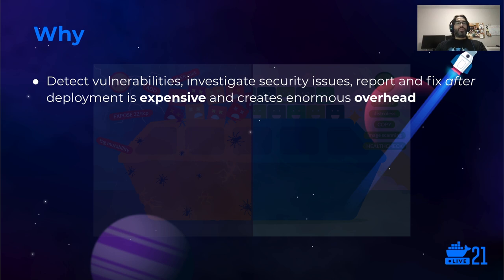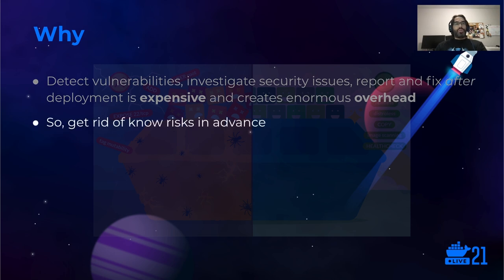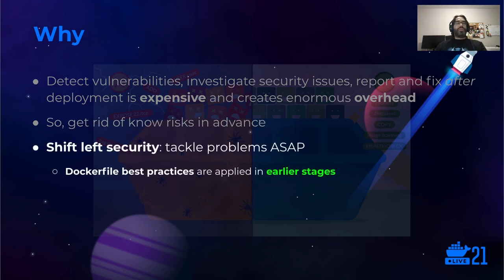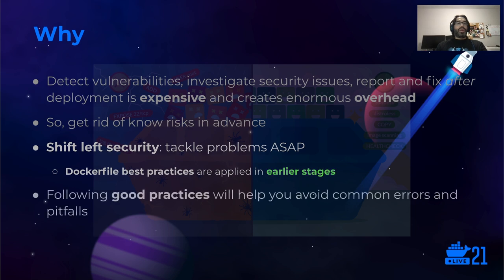Why focus on the Dockerfile? Can't we just detect problems later? Because detecting issues and vulnerabilities later is more expensive and creates more overhead. So if we know the risks, let's get rid of them in advance. This is closely related to the shift-left security paradigm — tackling security problems as soon as possible in a collaborative way between teams, instead of ignoring them in early stages and relying on periodic auditor checks. Dockerfile best practices are applied in the early stages and will help you avoid common errors and pitfalls.